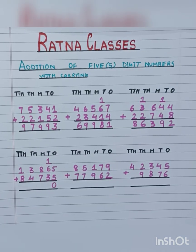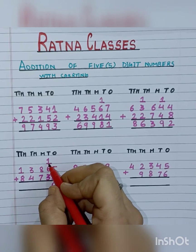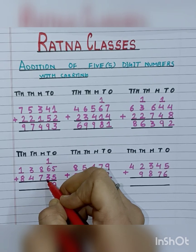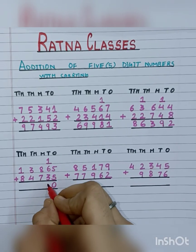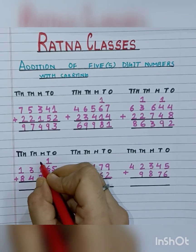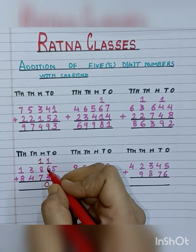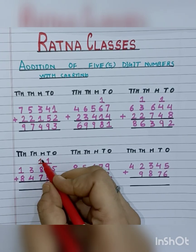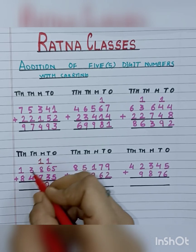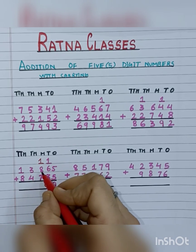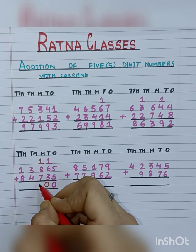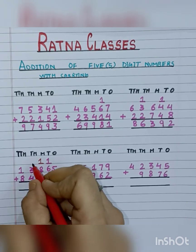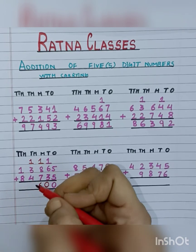Now we will add all the digits on the tens place: 1 carry plus 6 is 7, and 7 plus 3 is 10. So we will write 0 here and take 1 carry. Now 1 plus 8 is 9, and 9 plus 7 is 16 — we will write 6 here and take 1 carry.